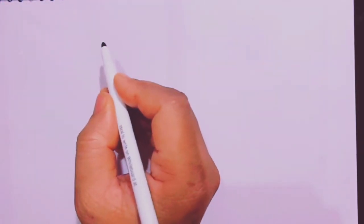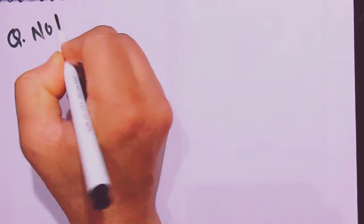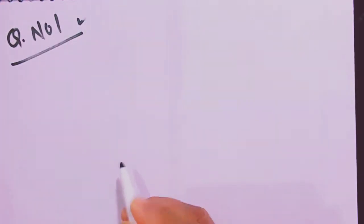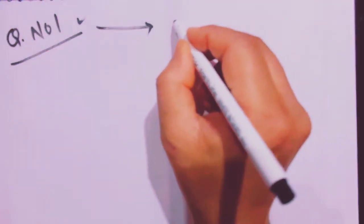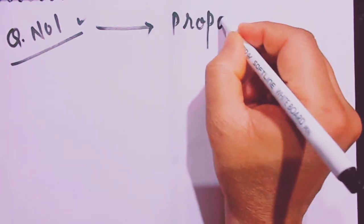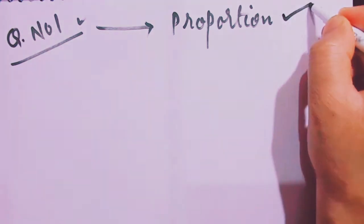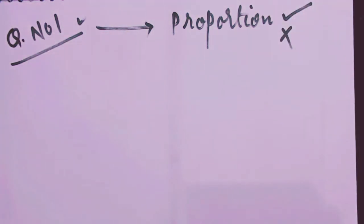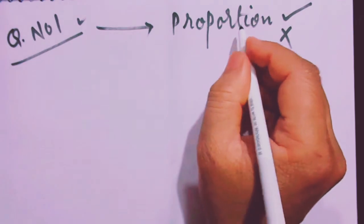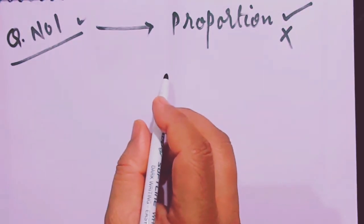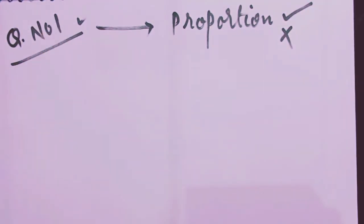We have completed question number one, where we were asked to find whether numbers are in proportion or not. The formula we used was: product of means is equal to product of extremes.